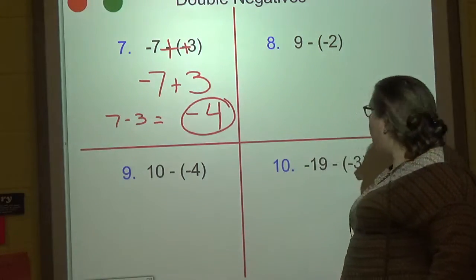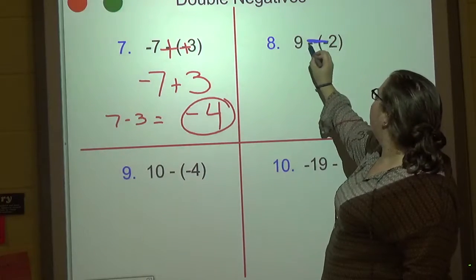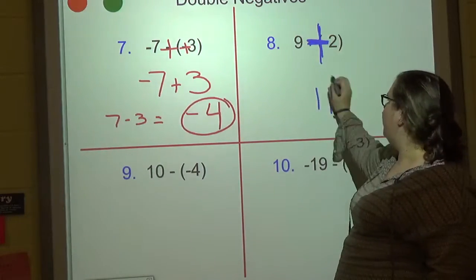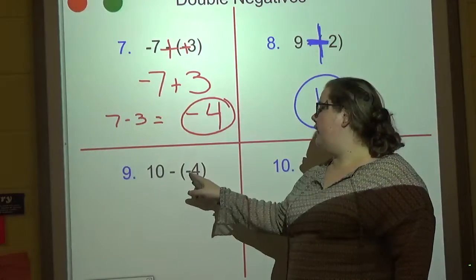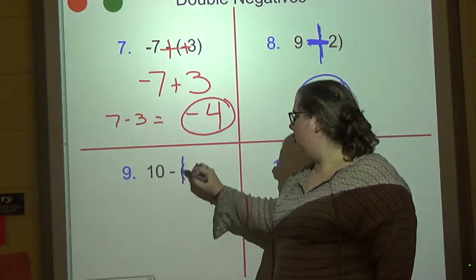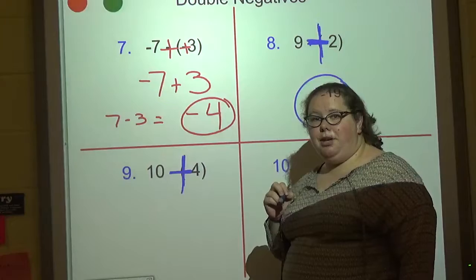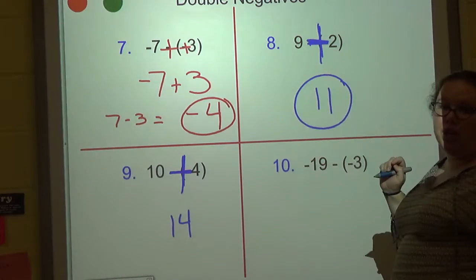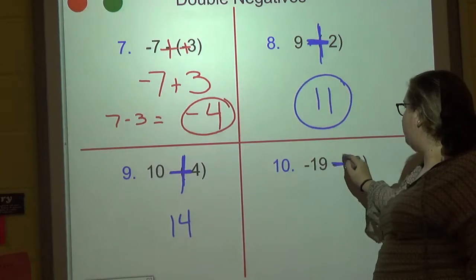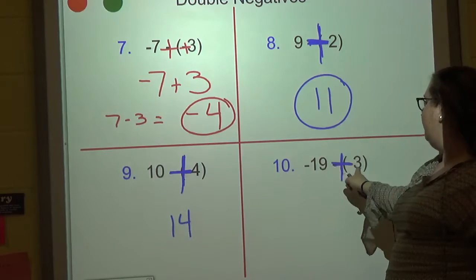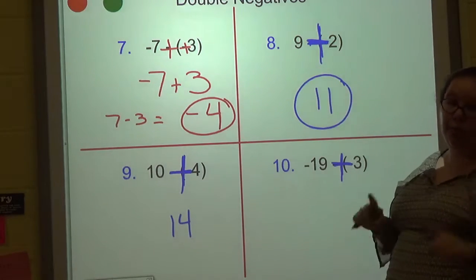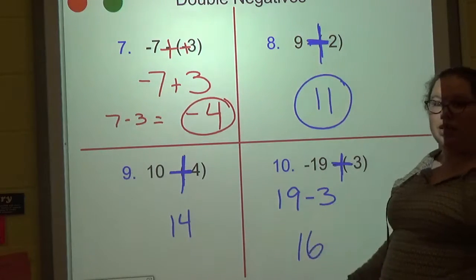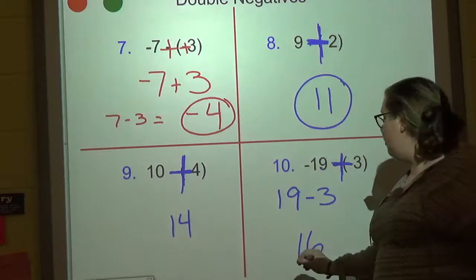Pause the video and try the others on your own. Now, instead of doing the full process with double negatives, here's what I like to do: when I see two negatives, I attach them and it becomes a big plus. So nine plus two: eleven, done. A double negative is a positive — that's true in English class too. Ten plus four: fourteen. Last one: two negatives in parentheses become a positive, so I have negative nineteen plus three. Different signs — subtract: nineteen minus three is sixteen. The bigger number is negative, so the answer is negative sixteen.